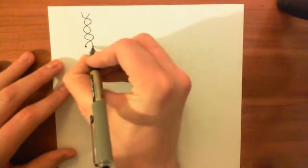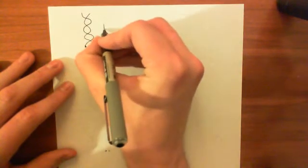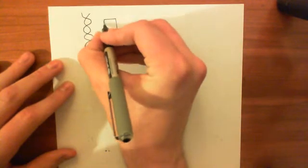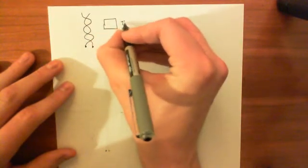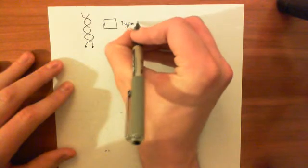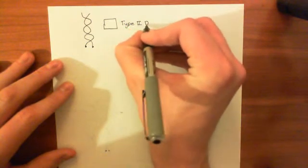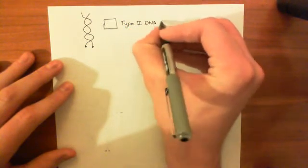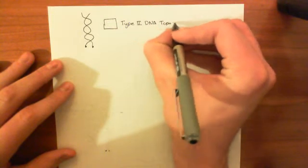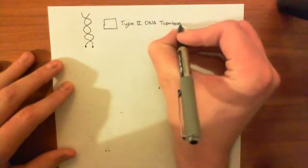So let's say here is our DNA. Here is our type 2 topoisomerase enzyme. And basically what it does is it cuts both strands of the DNA.